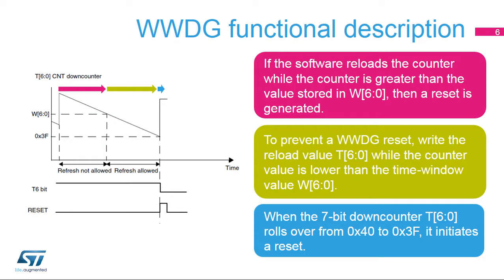This diagram illustrates how the window watchdog operates. When the 7-bit down-counter T[6:0] bits roll over from 0x40 to 0x3F, it initiates a reset when the T[6:0] bit is cleared. This happens when the application software did not react within the expected time window. If the software reloads the counter while the counter is greater than the value stored in W[6:0] bits, then a reset is generated. This happens when the application refreshes the counter too early. To prevent a window watchdog reset, the reload value T[6:0] bits must be written while the counter value is lower than the time window value W[6:0] bits, located in the green area.